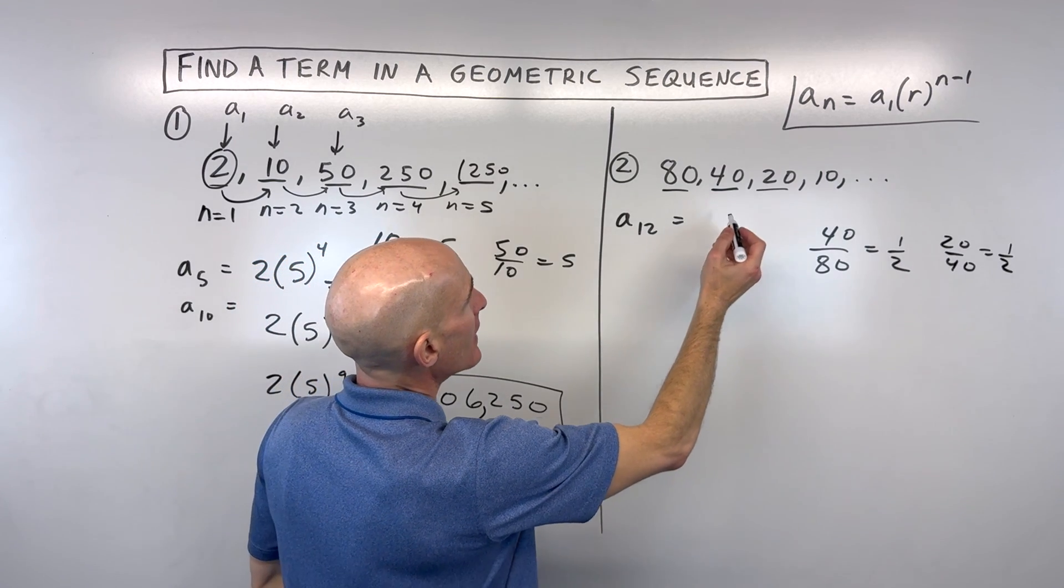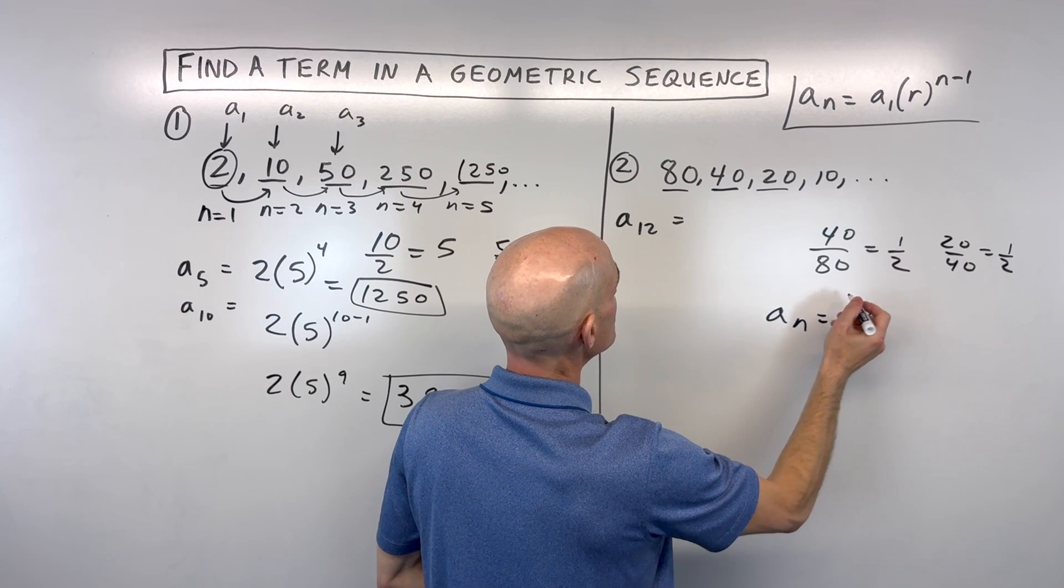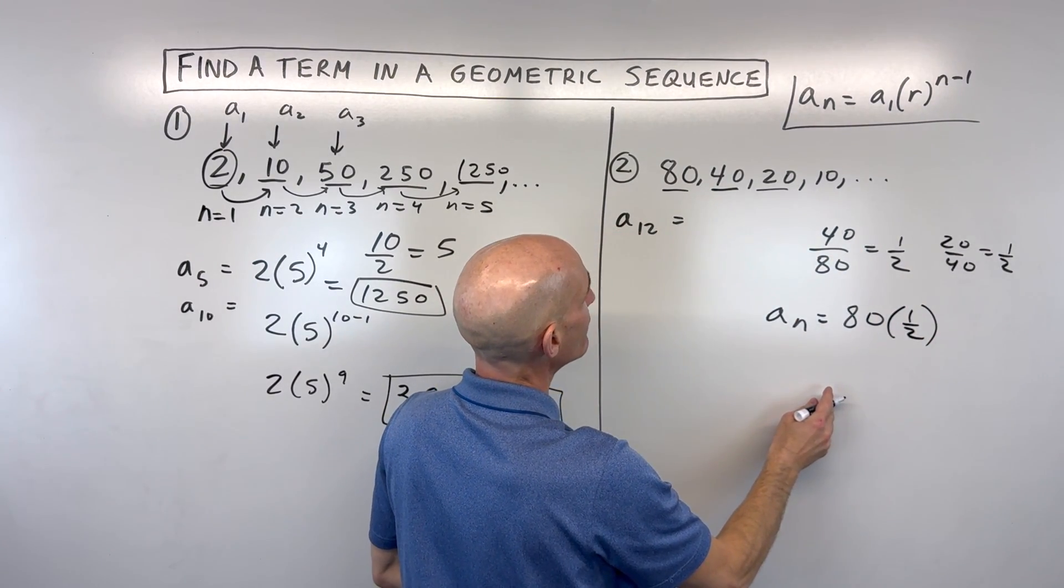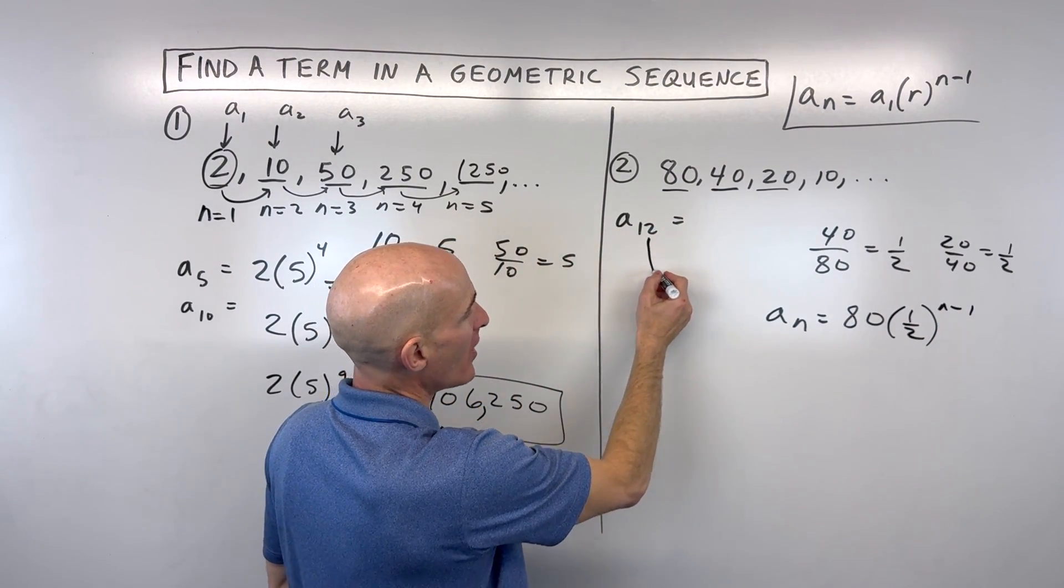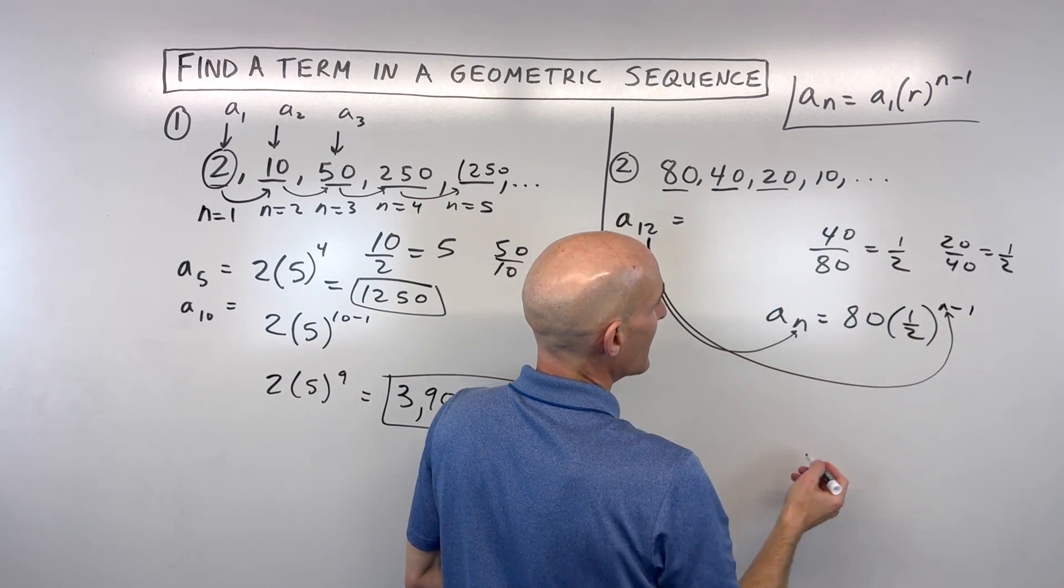So let's go ahead and write a formula first. We'll say a sub n equals a sub 1, which is the value of our first term, 80, times our common ratio 1 half to the n minus 1 power. So if we want to find a sub 12, we're going to put in 12 for n, and simplify.